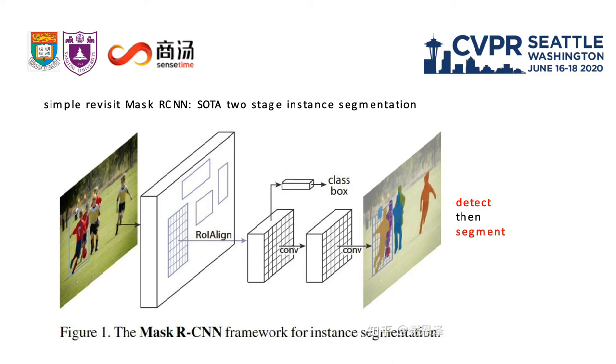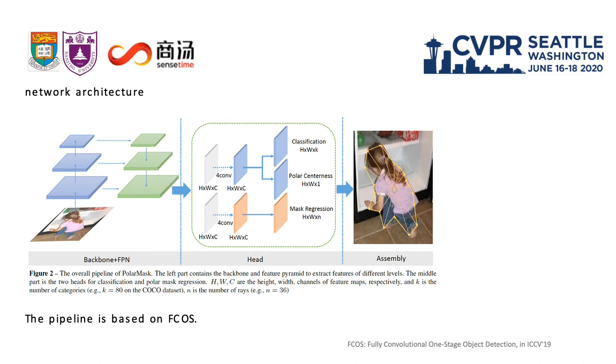It is two-stage because in stage one it detects boxes by RPN, and in the second stage it applies the segmentation branch on each box.